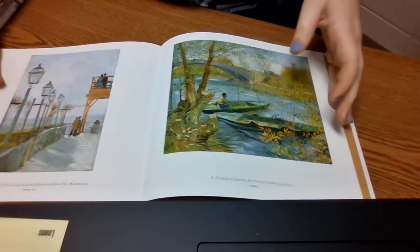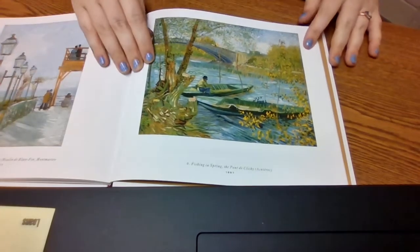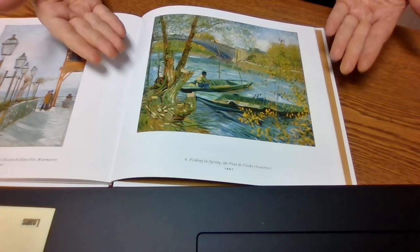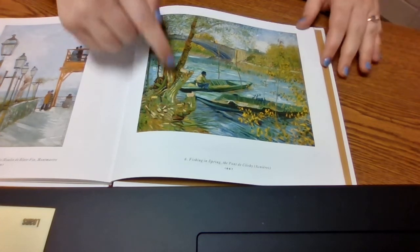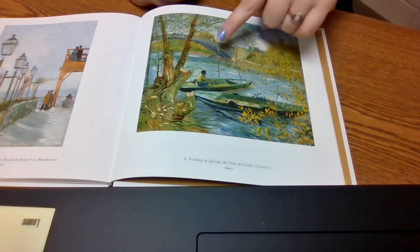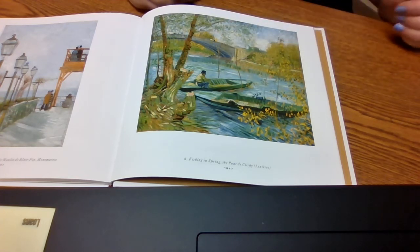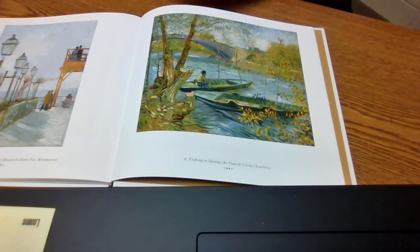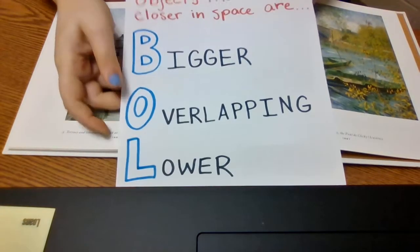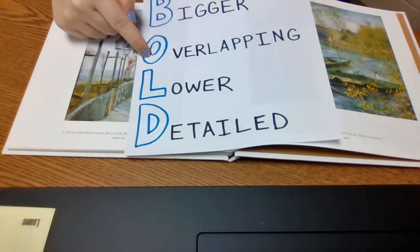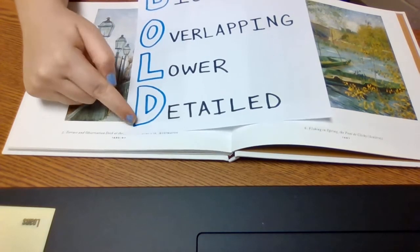So, if we are looking at this image, there are a few things I want you to notice. First off, what object appears closest to you? If you guessed the tree, I would agree with you. I would also maybe agree that this boat is probably pretty close to us. But if you said the bridge, that's not right. We are able to process space. So, when we're looking at this tree, we're looking for four things. Objects that are closer to us in space are bigger, overlapping, lower on the paper, and detailed.